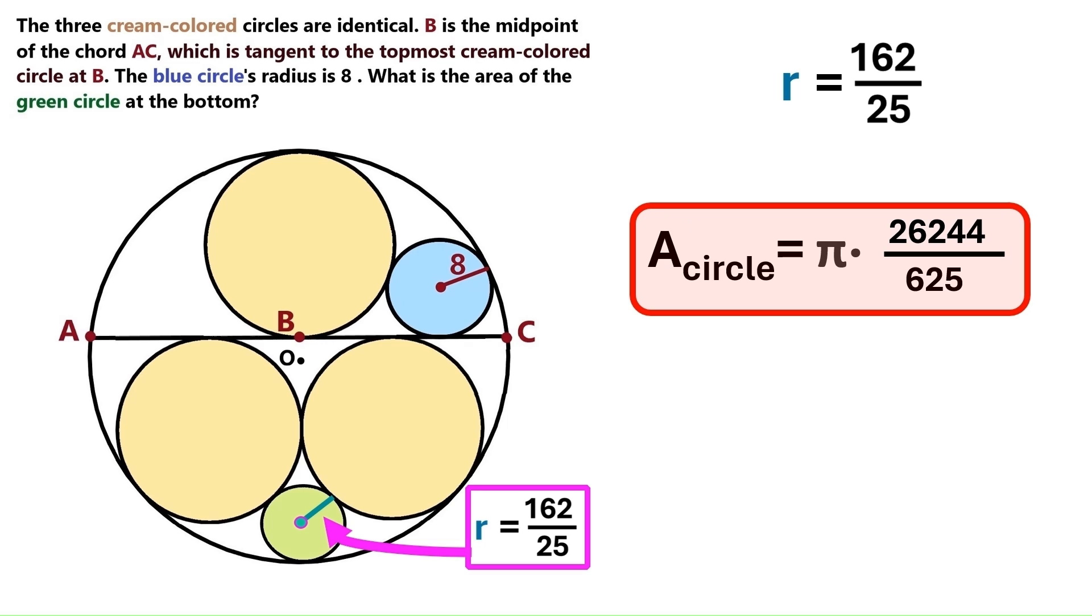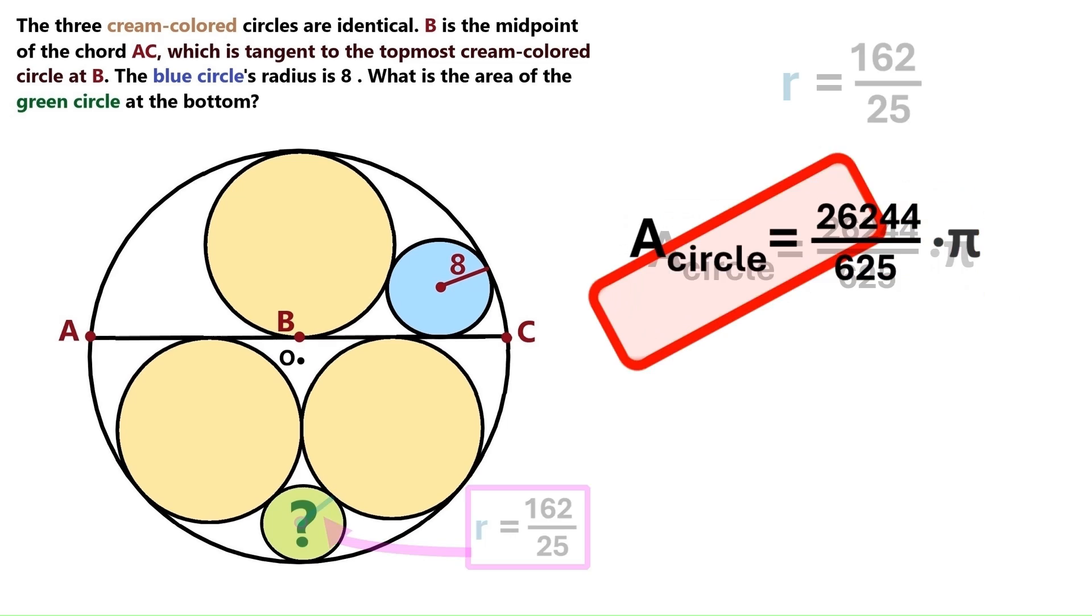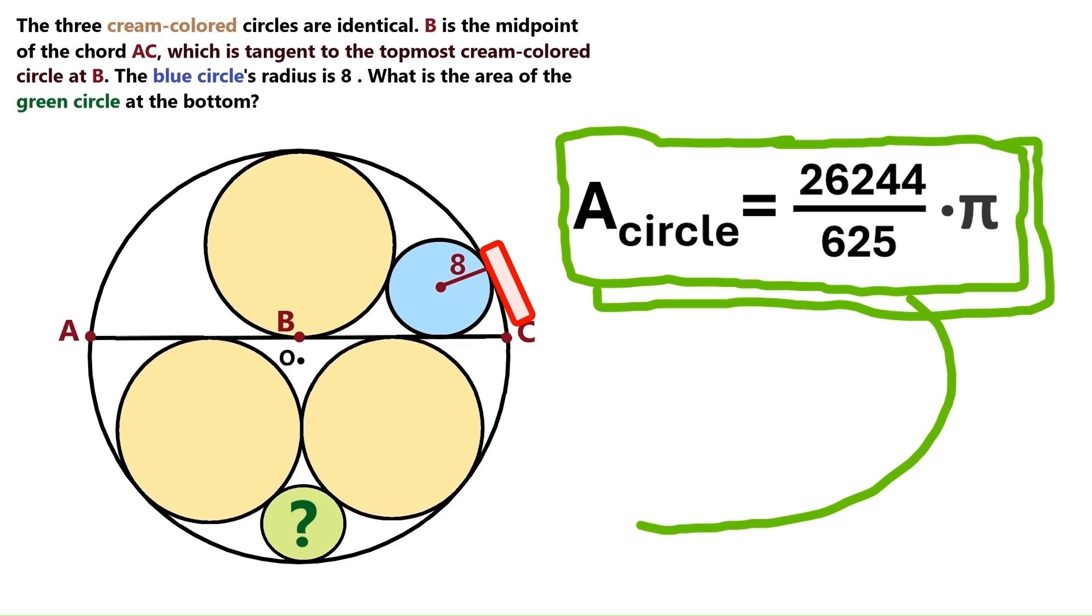And 625 times 625 is 390,625. He loves the powers of 5 for some reason. Let's change the order to make this look better. So there we are people. The area of the green circle is 26244 over 625 times π. Not a very neat fraction. But that's the answer to this problem.